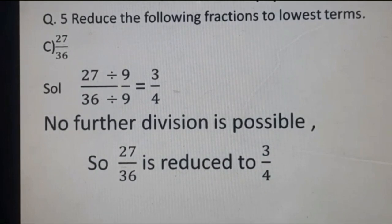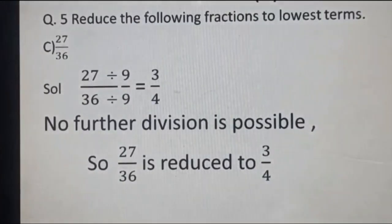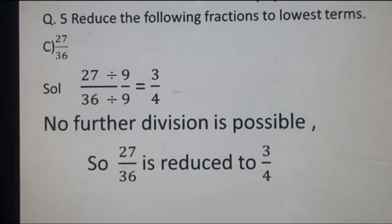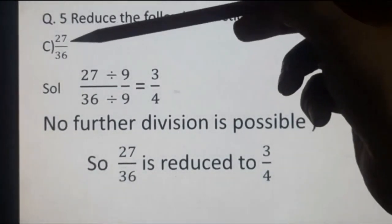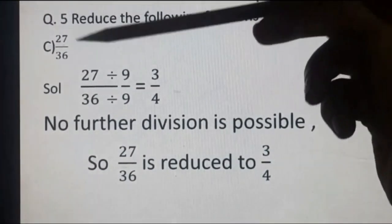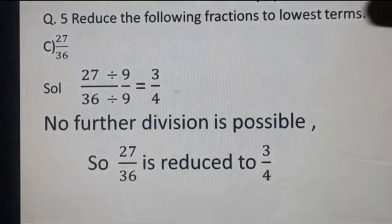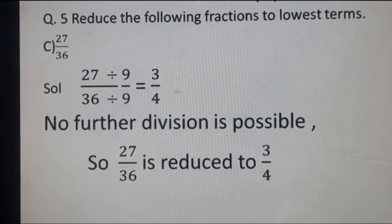Using the second method, the HCF of 27 and 36 is 9, then divide by HCF to get 3 upon 4. Also, if you started dividing by 3 instead, that is okay too — you would just need one more step dividing by 3 again.